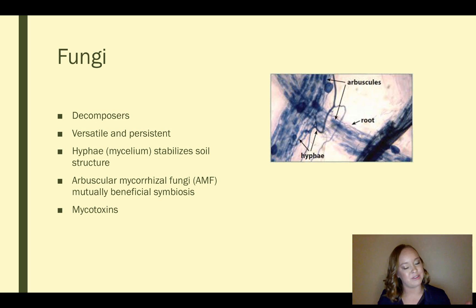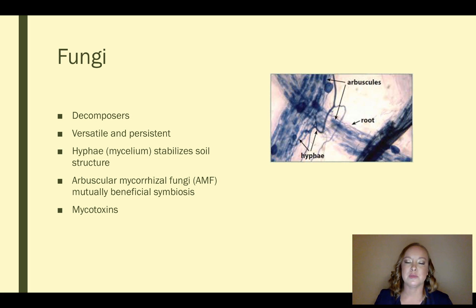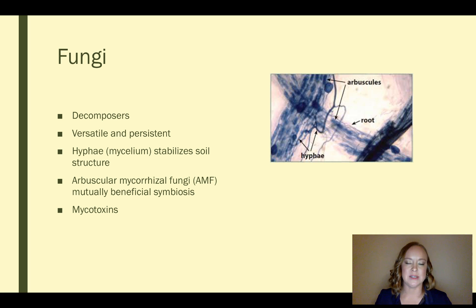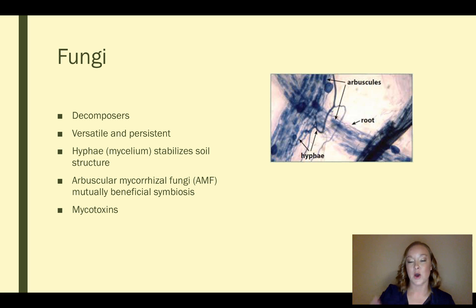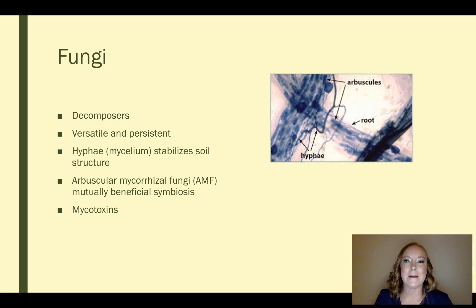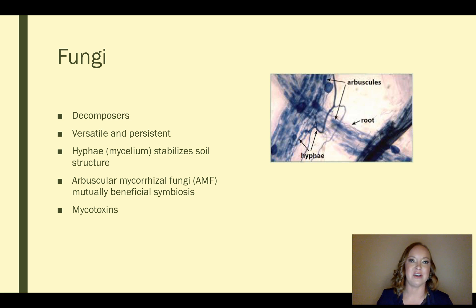On the other hand, with fungi you can have something called mycotoxins — chemicals produced by fungi that can be harmful to other plants and also humans. One of the most commonly known ones is aflatoxin, produced by Aspergillus flavus, which is actually carcinogenic. One interesting thing to know is that there are over 1 million species of fungi awaiting discovery in the soil, so there's still a lot we don't know about fungi.